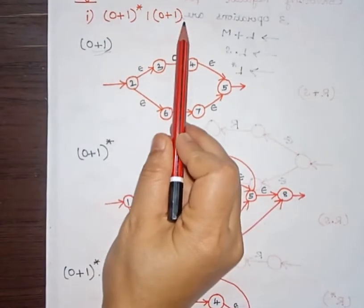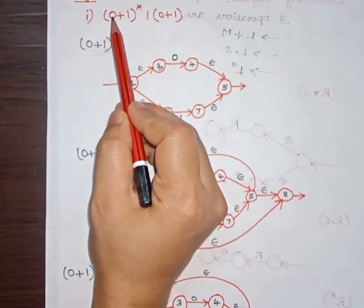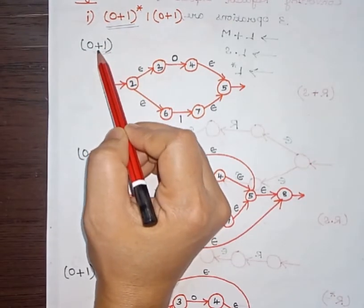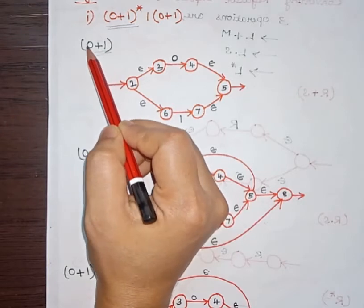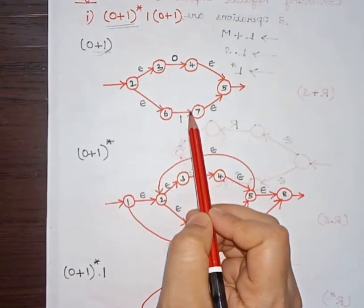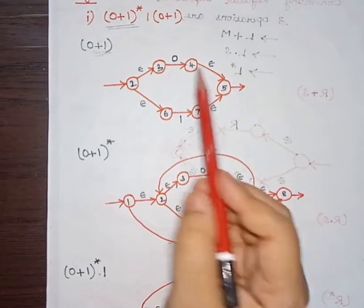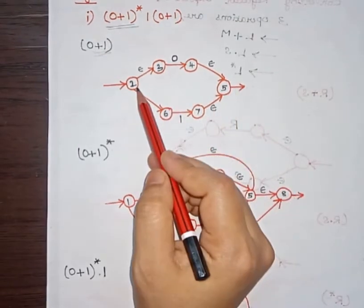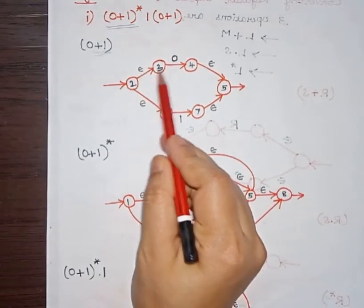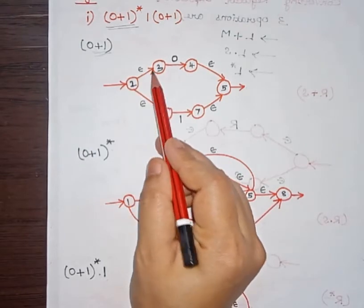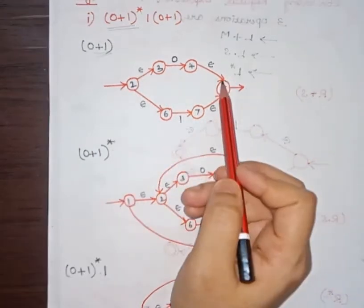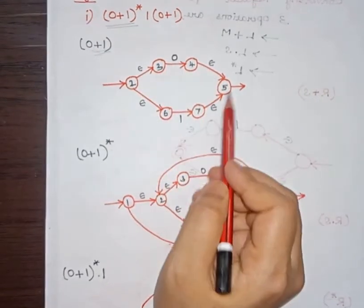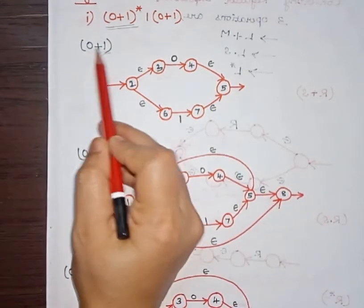For this expression, how we can construct the NFA? Initially we take (0 + 1) alone. We can see this is the union operation. Whenever we have a union operation on two symbols, this is how we construct the NFA with epsilon moves. I have used numbers on these nodes — don't worry about the values of nodes now; we can assign numbers at the end. First we will construct the NFA for the union operation.